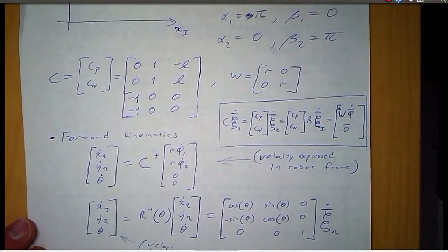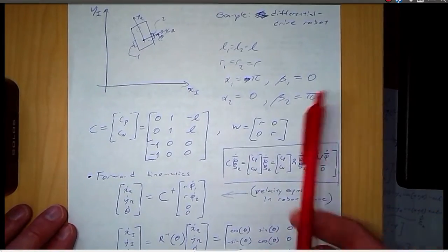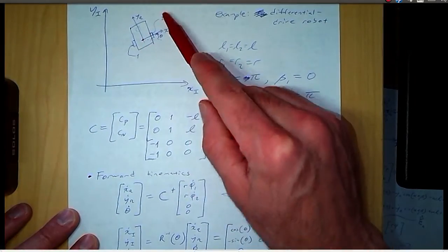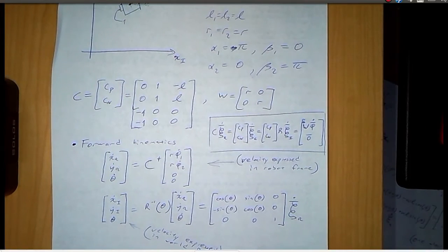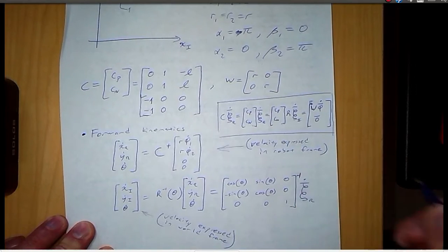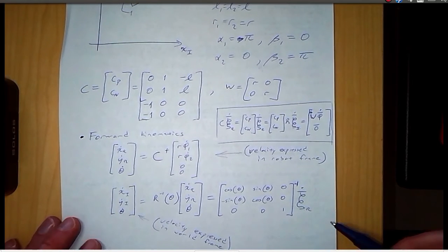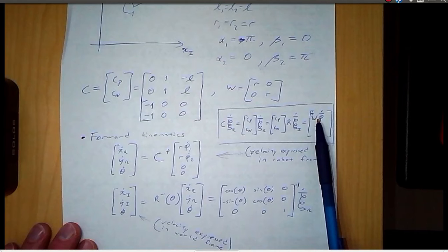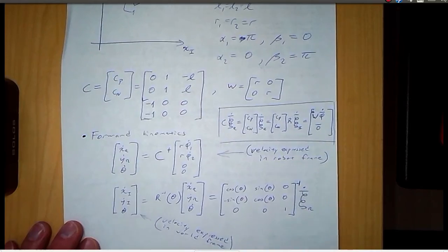If we want to find the velocity of the robot expressed in the world frame or the inertial frame, we just need to transform psi-dot-r into that coordinate system. To do that, we multiply by the inverse of the rotation matrix. Here's the rotation matrix, and we multiply by its inverse times psi-dot-r in order to get psi-dot-i. So that's the forward kinematics problem: given the wheel speeds and robot parameters W and C, find the Cartesian velocity psi-dot-i or psi-dot-r.